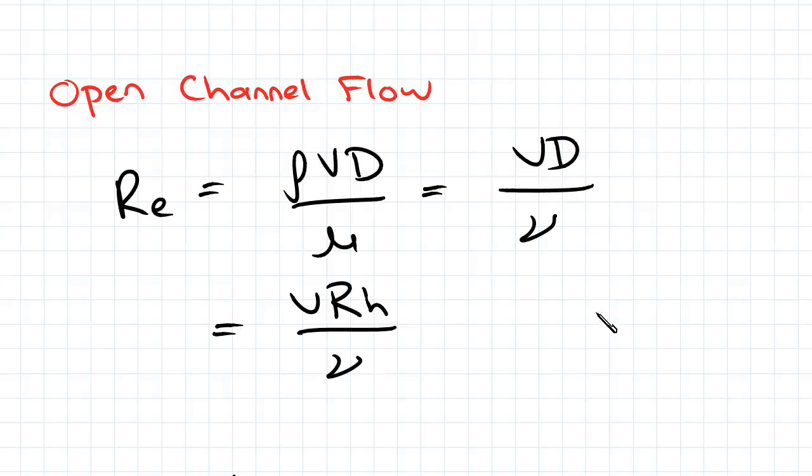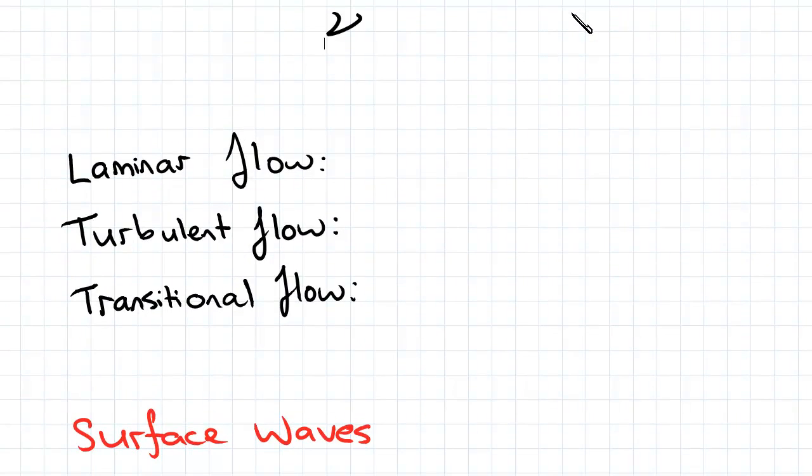For an open channel flow with an Re less than 500, the flow is classified as laminar. So this means it's a slow going flow which is very uniform and has very steady and uniform streamlines.